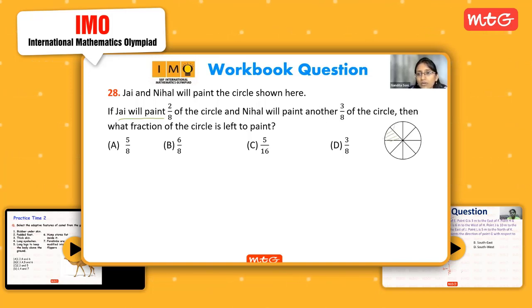Now for Nihal, I have to represent 3/8. That means how many parts will I shade? Three. So I shaded three more. This green represents Jai and this represents Nihal painting. Now the question asks what fraction of the circle is left to paint. Vishwesh, how many parts are left? Three parts are left, so what will be the fraction? 3/8. Yes, option D.